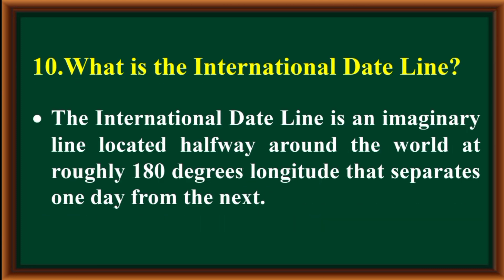What is the International Date Line? The International Date Line is an imaginary line located halfway around the world at roughly 180 degrees longitude that separates one day from the next.